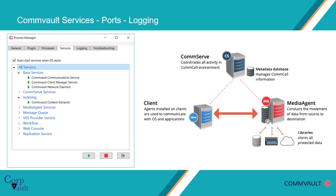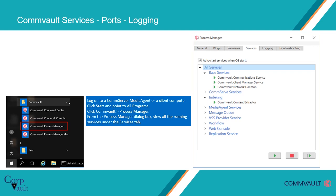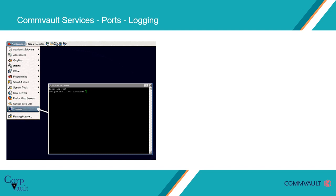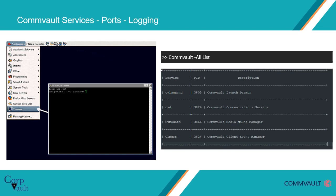As soon as you install a component, you can view the services for the component using the Process Manager. On Windows, it is available in the Start menu — point to All Programs, under Commvault, you see the Process Manager. For Unix machines, log on to the server with root user and run the command 'commvault -all list'. This will display a list of services running on the server, similar to this.